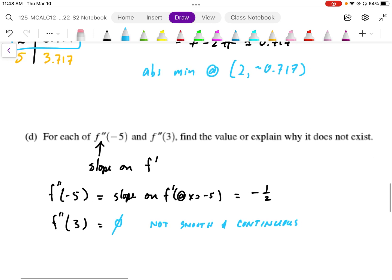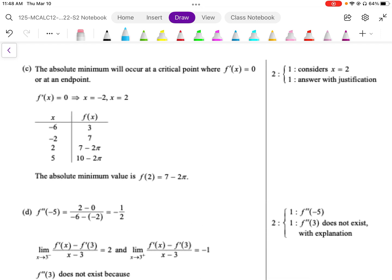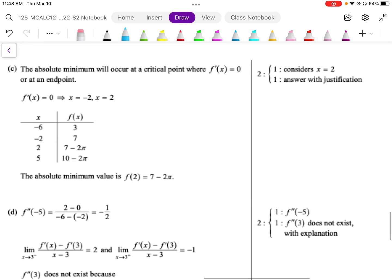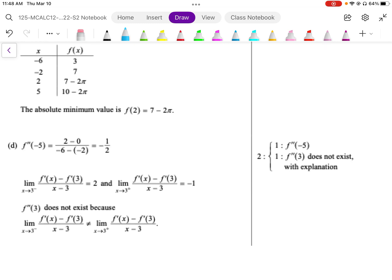So we've justified why it doesn't exist, and we've calculated the slope based on the slope of the F prime graph. Looking at the marking scheme, for C, we have a candidates list, and we work out the absolute minimum value. We consider x equals 2 as our candidate, and then we also have to show our endpoints in our candidates list for justification. For D, you need to calculate F double prime at negative 5, and show that F double prime at 3 doesn't exist, and we can just say that it's a kink. In this case, they gave a limit argument for that.